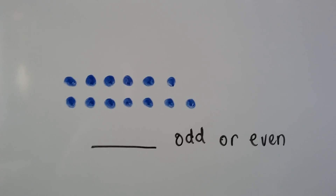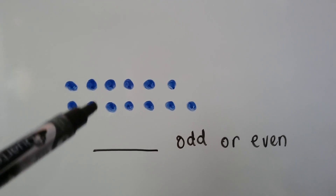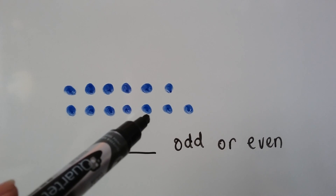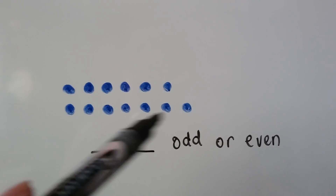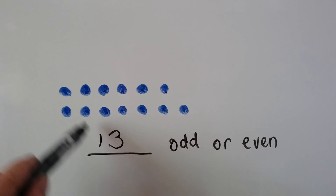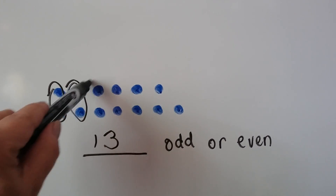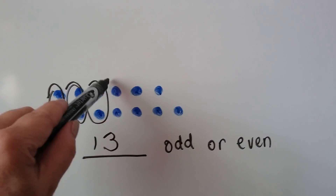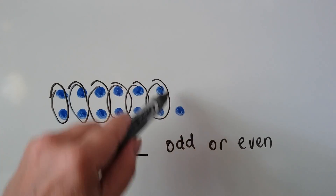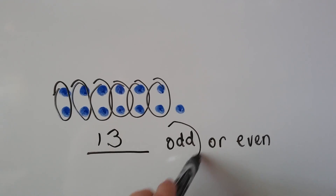How about now? Let's count them. 1, 2, 3, 4, 5, 6, 7, 8, 9, 10, 11, 12, 13. Let's make pairs. We have one left over, so 13 is odd.